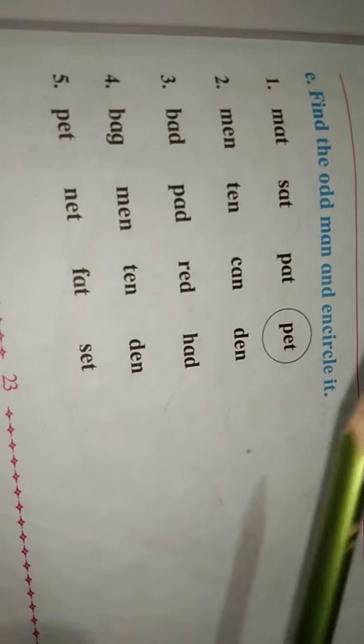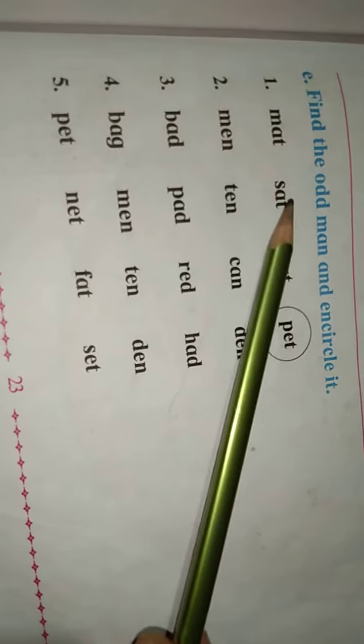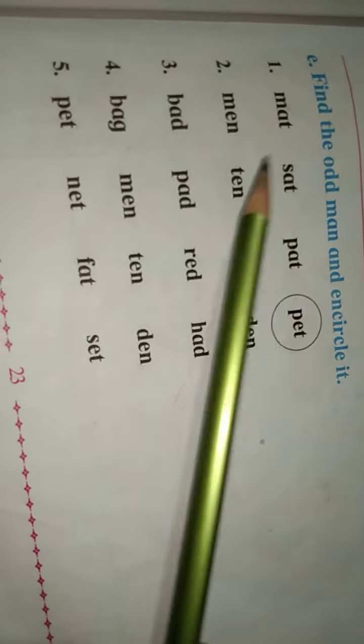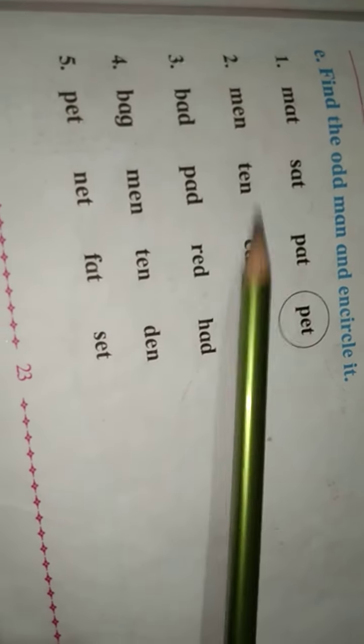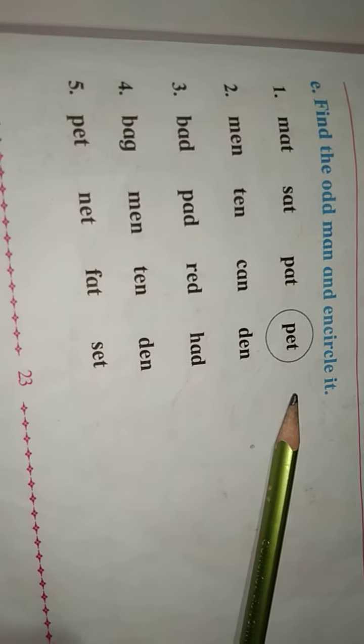Hello students, today we are going to learn a new chapter that's named find the odd man and encircle it. Here observe, in one group given four words. We try to read that word and find different pronunciation.